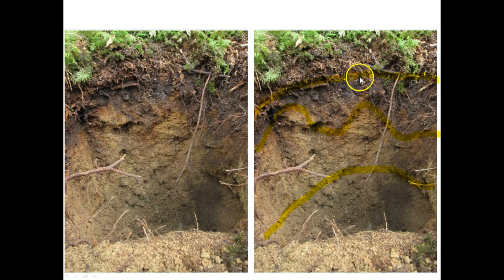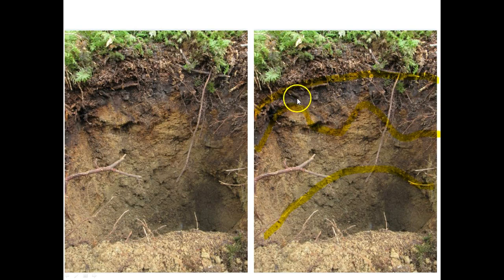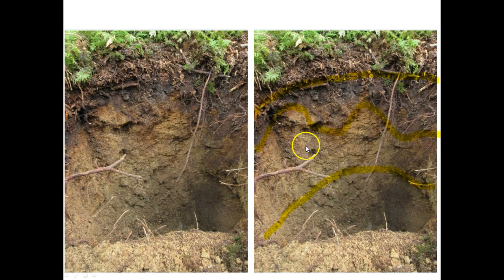Above was the LFH. Here's an AH horizon, so it's enriched with a lot of humus. A very wavy horizon boundary leads into a B horizon — a BF of sorts, enriched with iron oxides. And then further down, a C horizon.